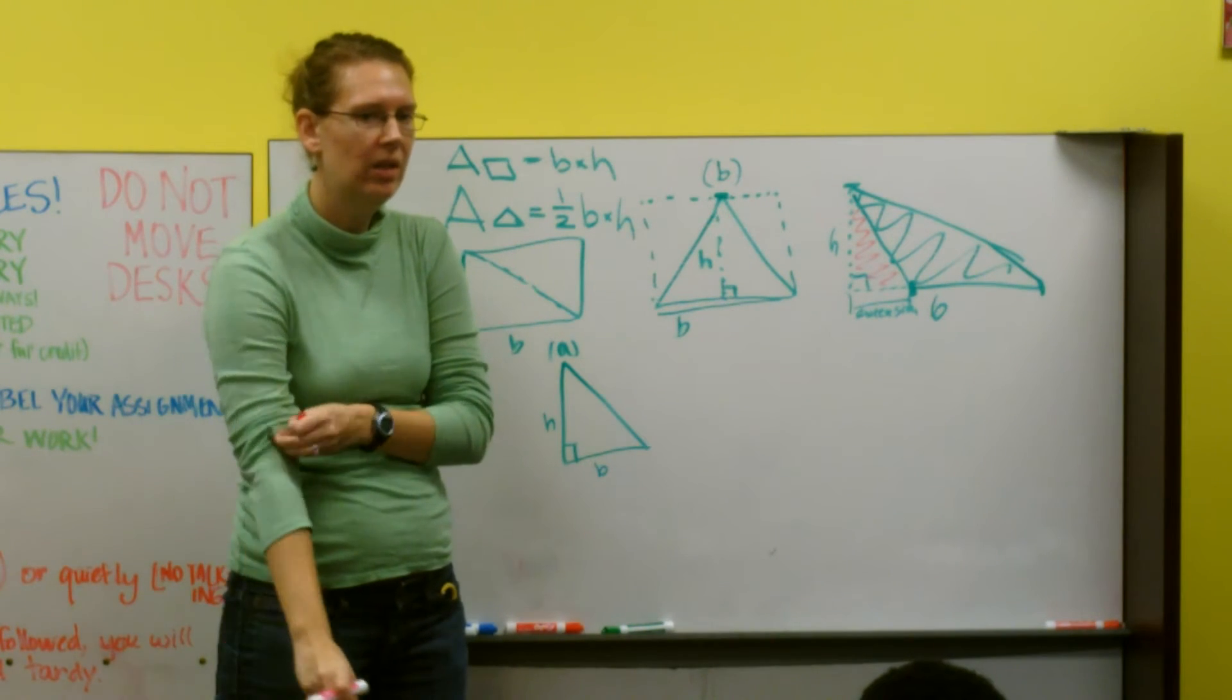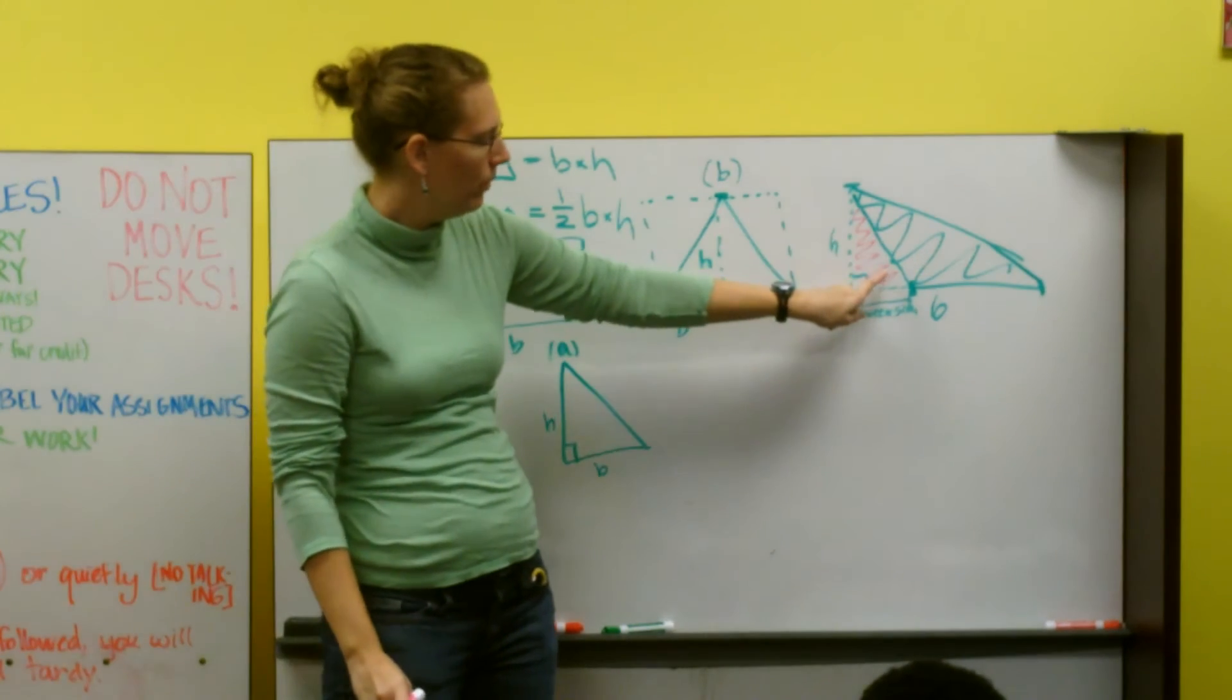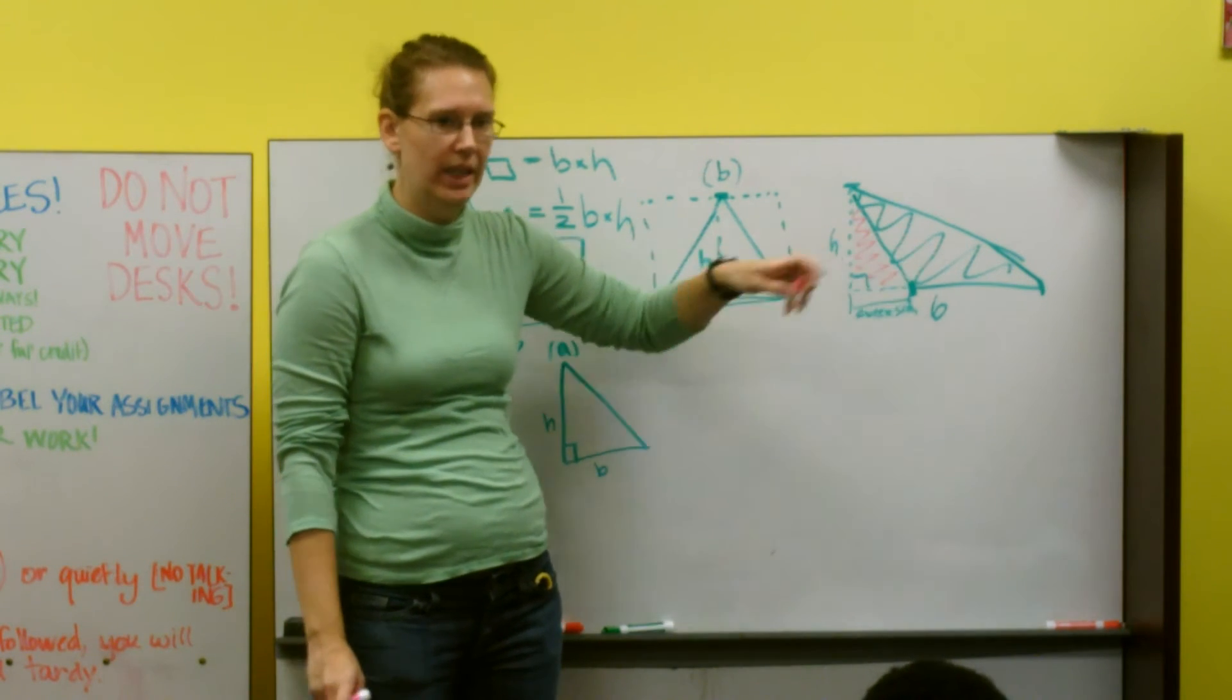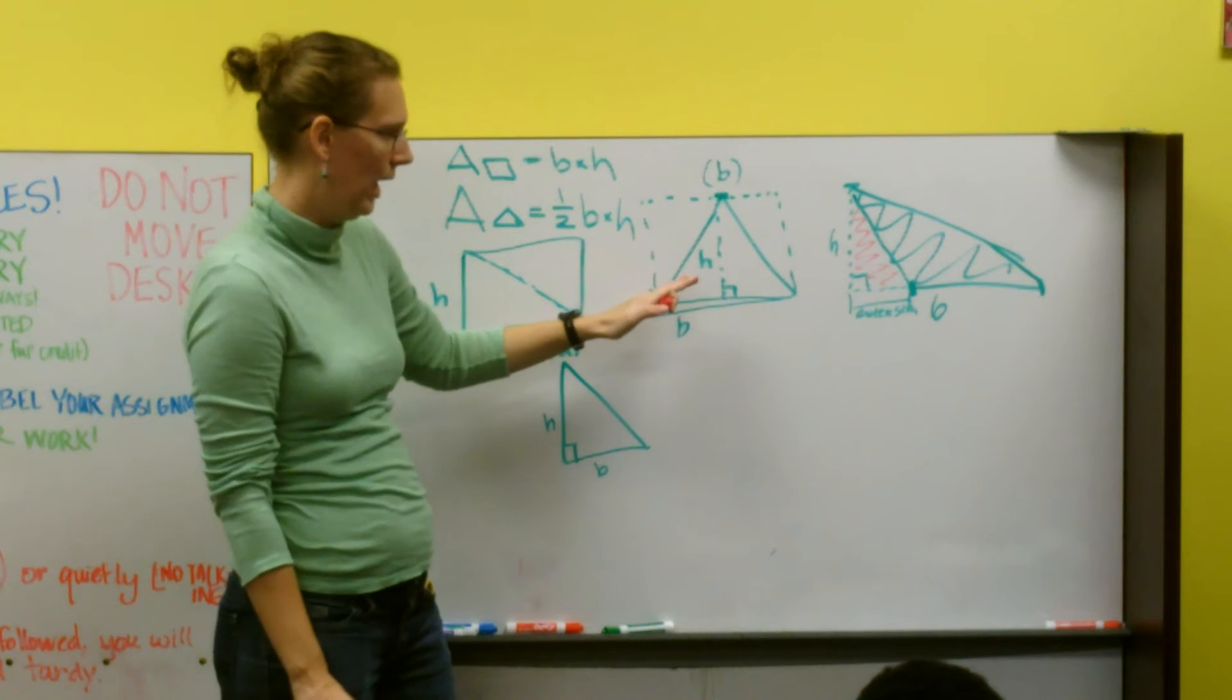Does everyone understand that part? So this pink part, we're not trying to find the area. We're only trying to find the area of the green solid triangle.